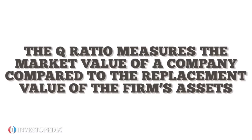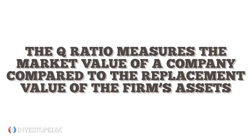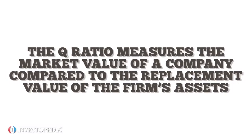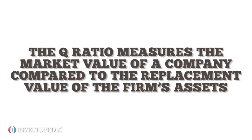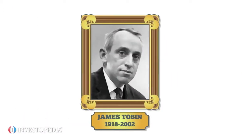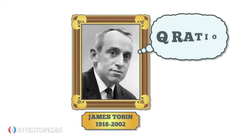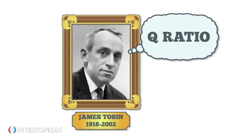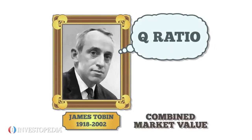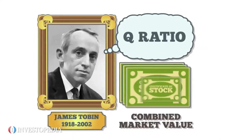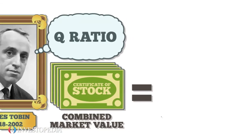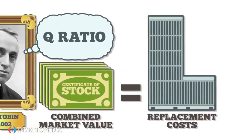The Q-Ratio measures the market value of a company compared to the replacement value of the firm's assets. Nobel laureate James Tobin came up with the Q-Ratio. He based it on his theory that the combined market value of every company on a stock market should roughly equal their replacement costs.